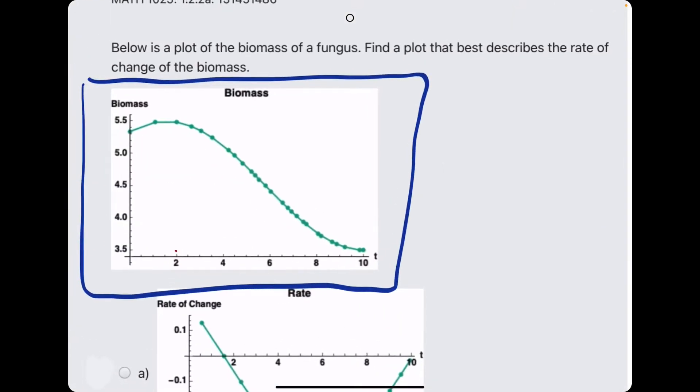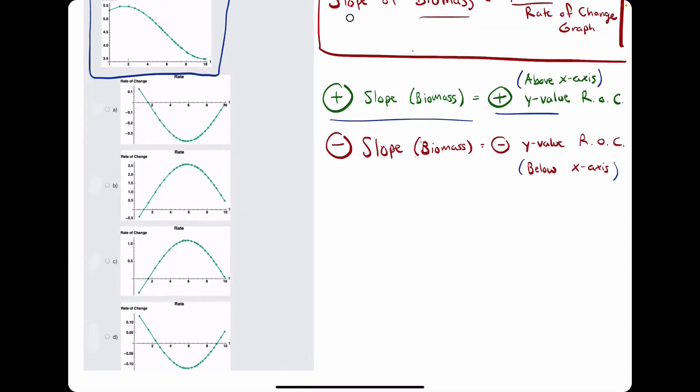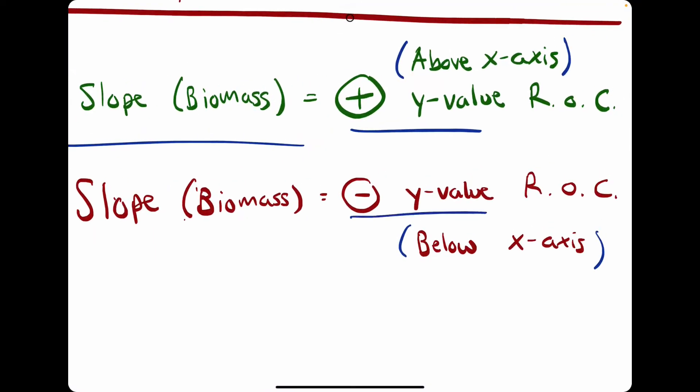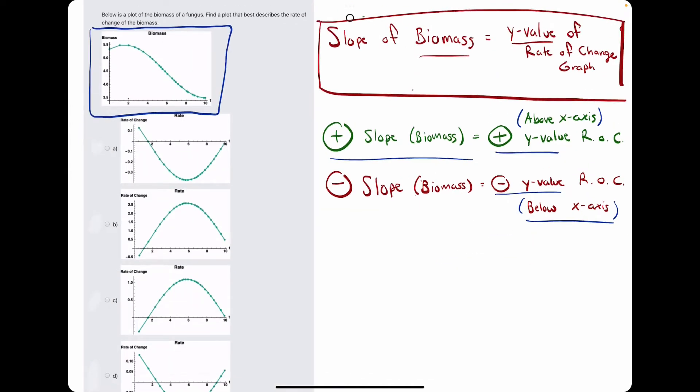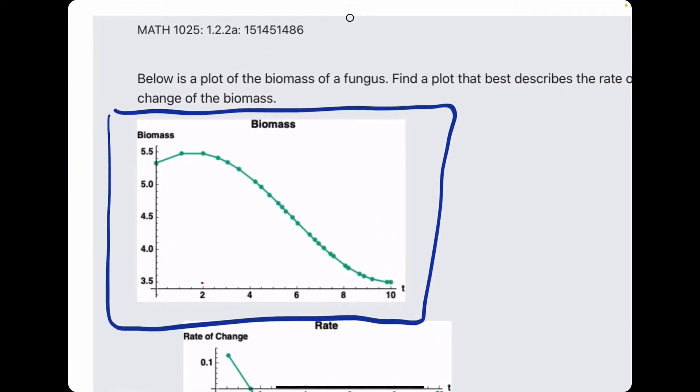Likewise, where this function has negative slopes, the correct function down here should have negative y values, or lie below the x-axis. So, let's break it down. Where does this original function have positive and negative slopes?